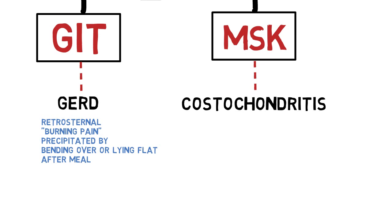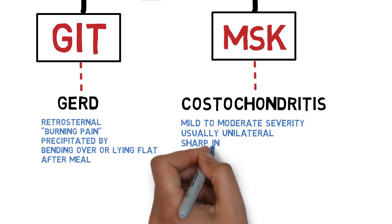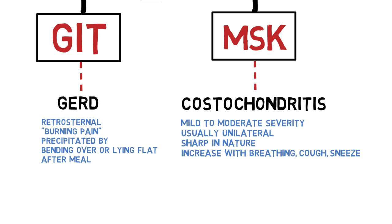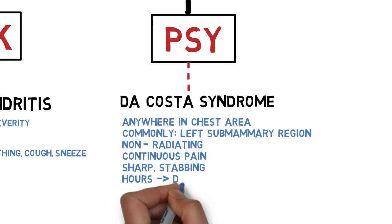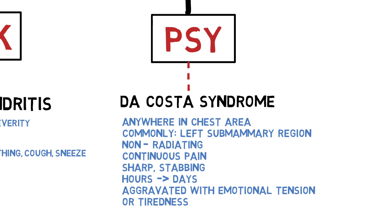GERD is precipitated by bending over or lying flat, because in these positions gastric acid easily refluxes into the esophagus. In costochondritis, the chest pain is mild to moderate in severity and usually localized to either side of the chest. It is sharp in nature, aggravated by deep breathing, coughing or sneezing, but not because of the pleura — rather, this movement stretches the costochondral ligament as the chest expands. There is also a specific functional syndrome called Da Costa syndrome, where patients commonly complain of chest pain in the left submammary region that is non-radiating, sharp and stabbing, lasting from hours to days, aggravated by emotional tension or tiredness. Other causes of functional pain include panic attacks and Munchausen syndrome.